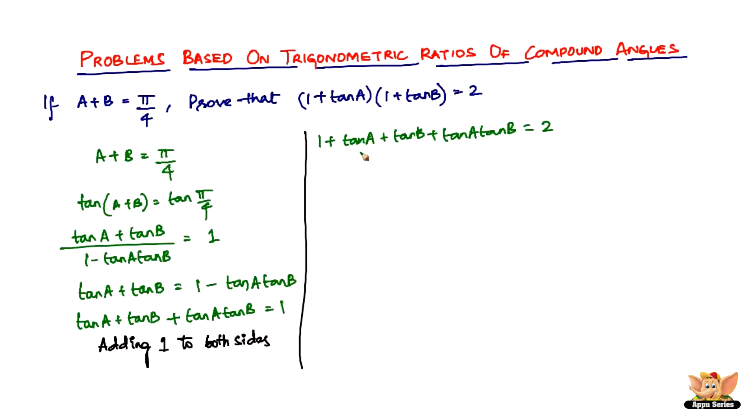Now taking out 1 plus tan A, rather grouping it, write 1 plus tan A here, and then since these two terms have got tan B and tan B, take out tan B and you have 1 plus tan A, which is equal to 2.